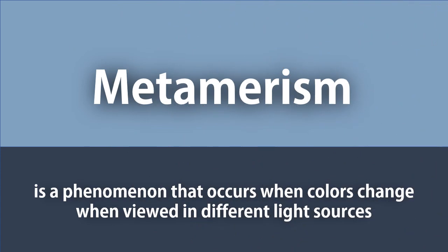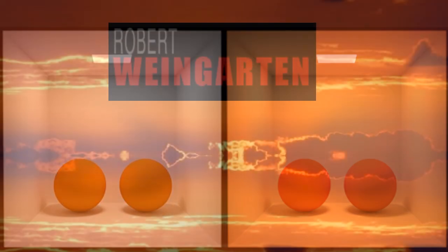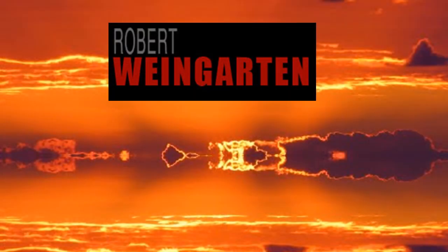I told you we'd be back to metamerism. It's the phenomenon that occurs when colors change when viewed in different light sources. If you look at both of these pictures — the one on the left and the one on the right — they have the same objects inside of them. But what's changed? The atmosphere. And the atmosphere makes one image look warmer than the other. That's an effect of metamerism. This is photographer Robert Weingarten, who's made a career out of documenting metamerism with his camera.